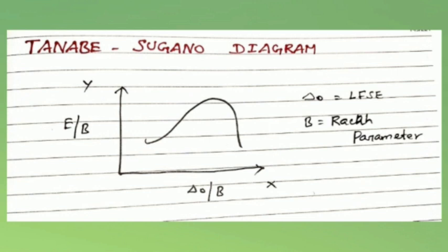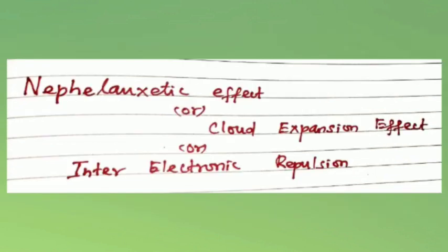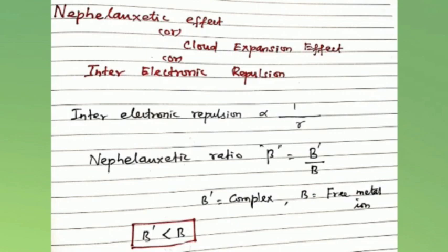Where E is the term energy or spectroscopic energy, Δ₀ is the ligand field splitting energy, B is the Racah parameter or inter-electronic repulsion parameter. Next one is nephelauxetic effect or cloud expansion effect, or otherwise called inter-electronic repulsion.